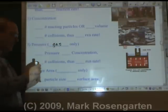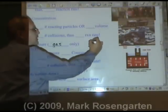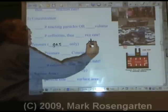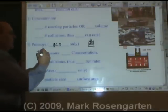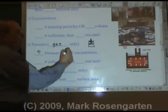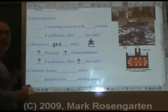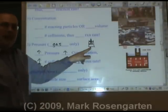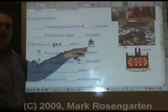Pressure affects only gases. When you take a cylinder with a gas trapped inside and a piston you can move, when you push down on the piston, you give the molecules less volume to move around in. When you increase the pressure, you give them less volume, and therefore the concentration goes up. You'll have more collisions and a faster reaction rate. So if you've got gases and you want to make them react faster, just increase their pressure — squeeze the molecules closer together and they're going to collide more frequently.